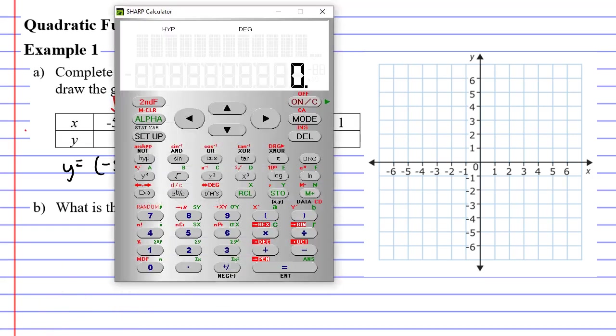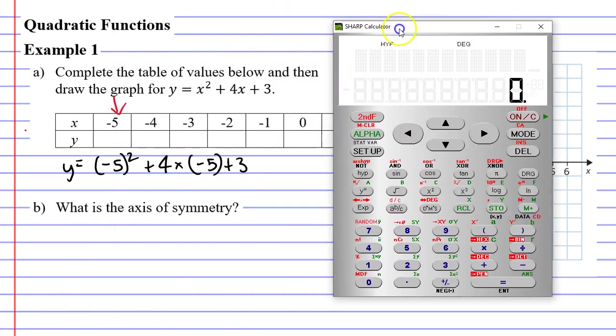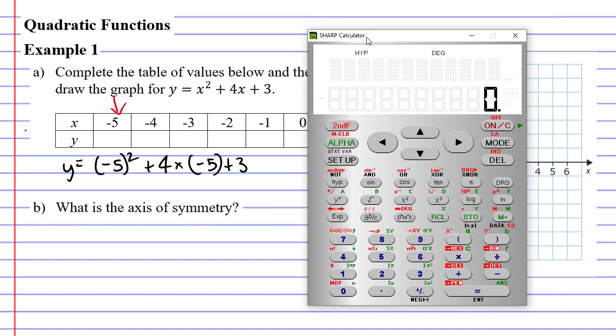Now I'm going to work this out using my sharp calculator. And the good thing about the sharp calculator is that it automatically puts brackets around negative numbers. I'll show you now. If I go negative 5 and then square it, you'll see that it automatically put brackets around it.